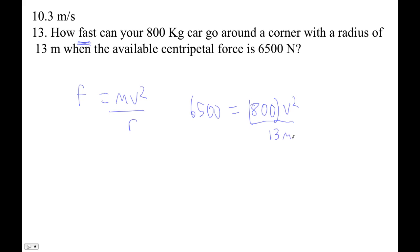Oh dear. I don't think you can go very fast. That's a very sharp corner. It's like you're parking the car. Okay, so to solve for V, I'm going to start on this side. I'm going to type 6500, multiply by 13, divide by 800, and that will be V squared, and then take the square root of that.